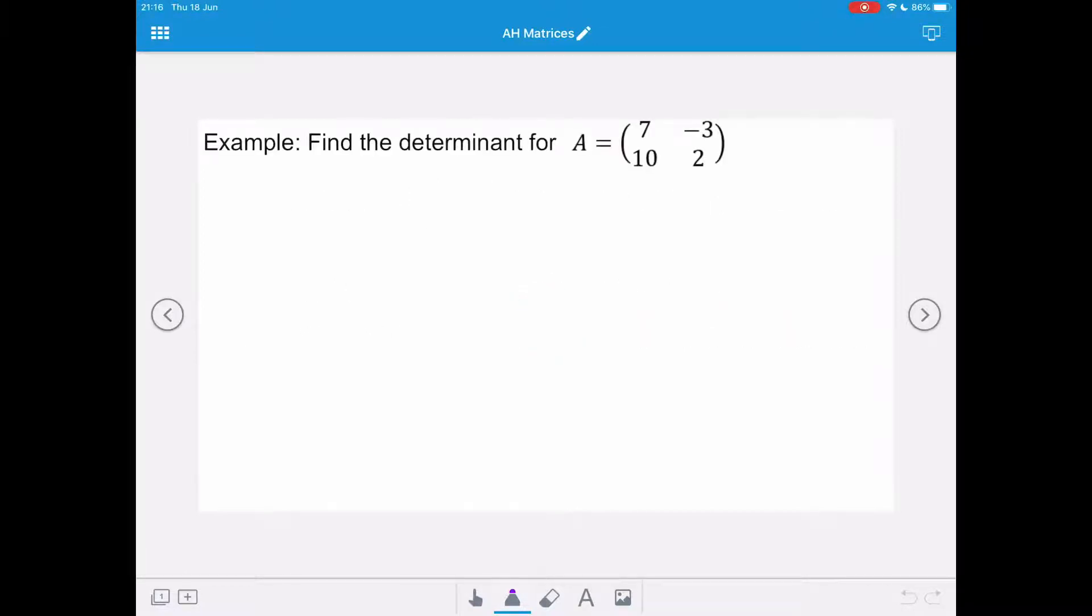So we want to find the determinant of matrix A when it's [7 -3; 10 2]. So the first thing we need to do is write down our formula for the determinant of A, and that is ad minus bc.